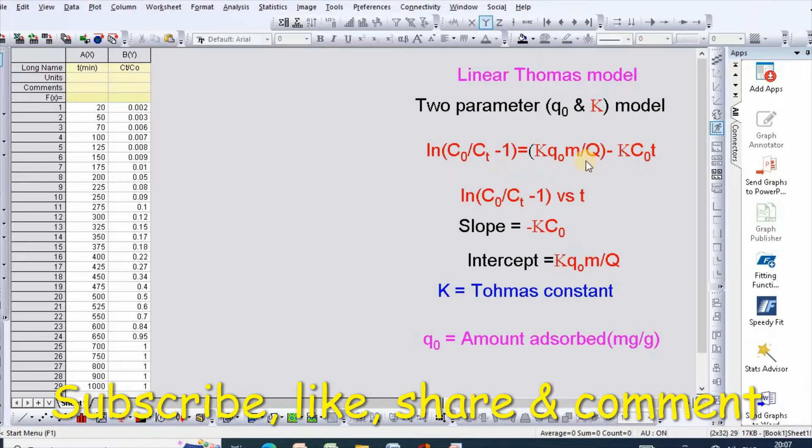From this equation, a plot of ln(C0/Ct - 1) versus t will produce a slope of -k·C0 and intercept equal to (k·q0·m)/Q. Where K is the Thomas constant and q0 is the amount adsorbed.